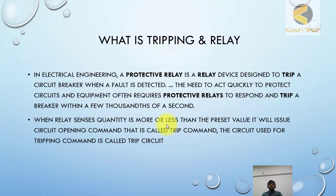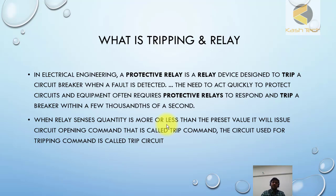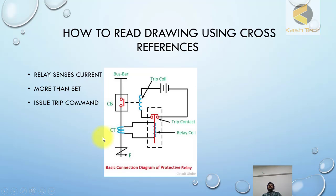The upper definition is a textbook definition. Simply put, a relay is a sensing device. Once the relay's sensed or measured value is more than the set value, after a preset time it will give the tripping command. The tripping command is issued, the contact of the relay will operate, and the circuit will close — this is then called a tripping circuit. The tripping command is issued and the breaker will trip. This is how the tripping relay and tripping command work.